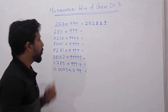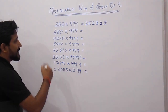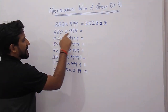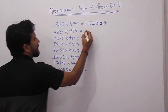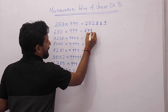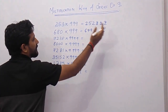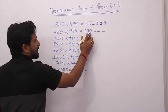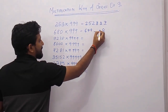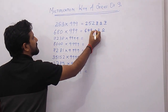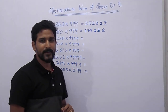So your answer will be 252,747. Now we will see another example: 680 × 999. Decrease 680 by 1 to get 679. It is a 3-digit number, so put 3 spaces and take the 9's complement from the rightmost space: 9 minus 9 is 0, 9 minus 7 is 2, 9 minus 6 is 3. So the answer is 679,320.